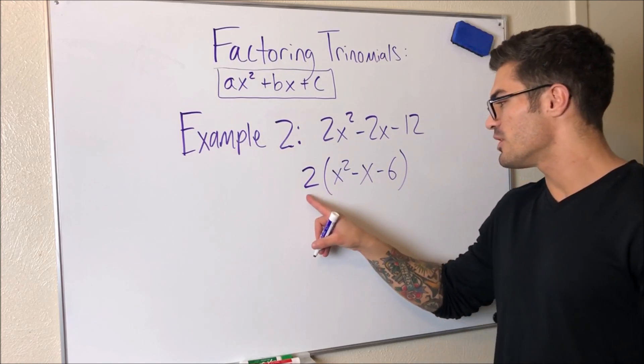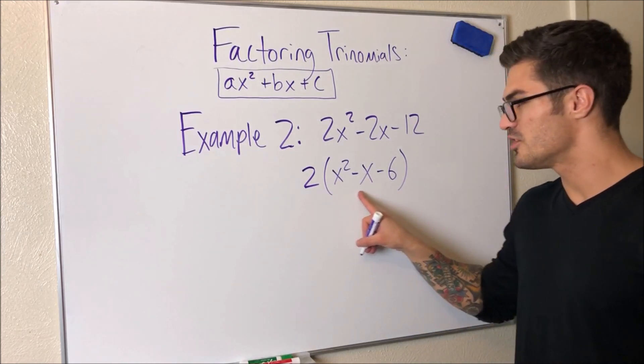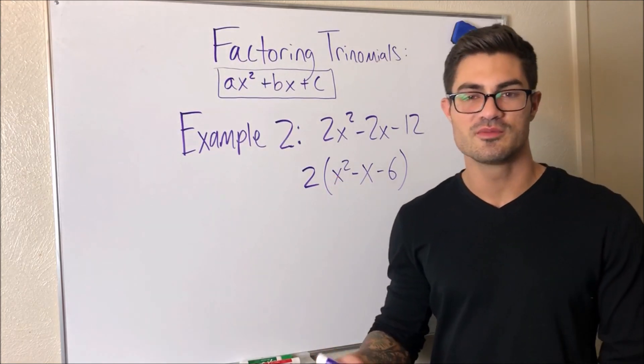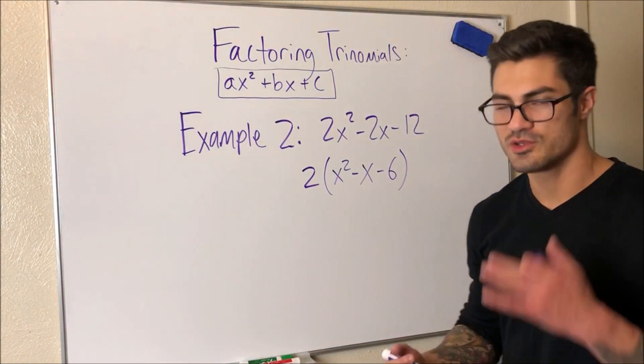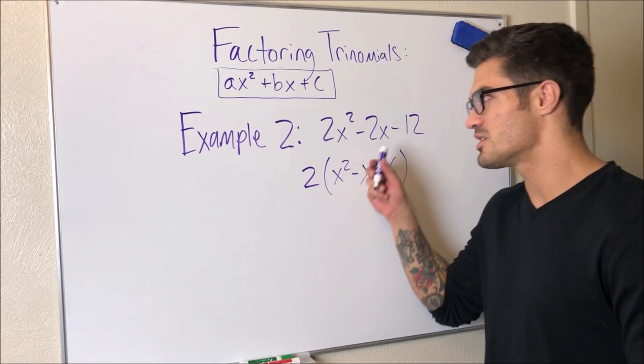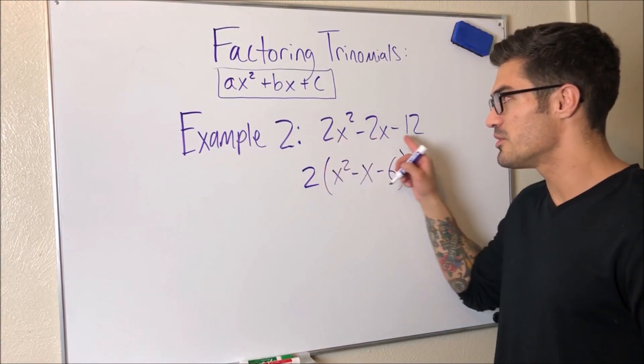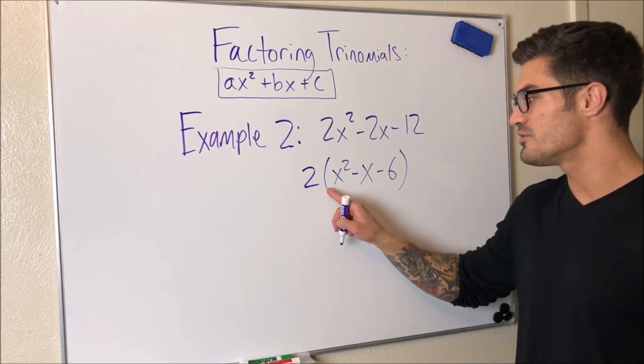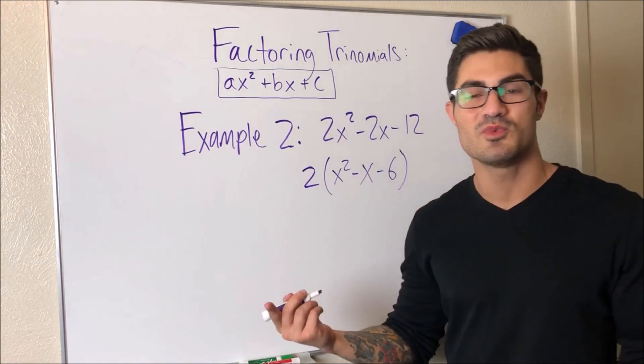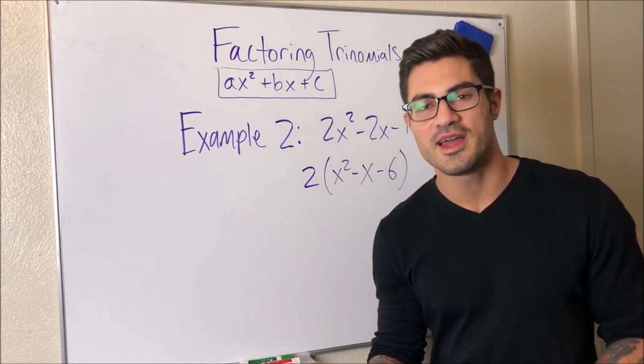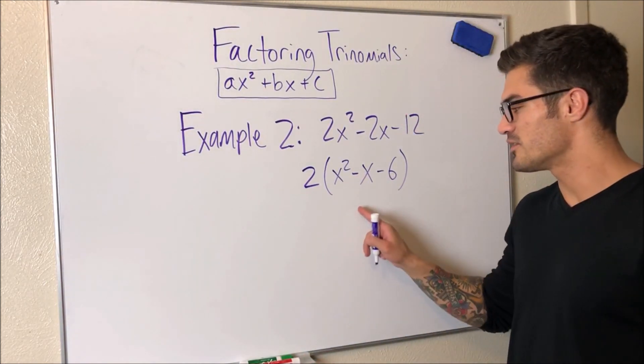But look what we're left with. We're left with a two, and then here we have a trinomial. But this time, it's a trinomial where a does equal one. And this is the reason why we always look for a greatest common factor when we're given these kind of problems where a does not equal one. Because a lot of times, when you do have a common factor, you can pull it out and you're left with something where a does equal one. Now we can use that case one to factor this. Now we can just do the multiply-add method to this.